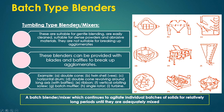Blenders can be segregated into batch or continuous types. Tumbling-type blenders or mixers are suitable for gentle blending, easily cleaned, suitable for dense powders and abrasive materials, but not suitable for breaking up agglomerates — though they can be provided with blades and baffles for that purpose. Types include double cone, twin shell, horizontal drum, double cone with baffles, ribbon, vertical orbiting screw, batch muller, and single rotor turbine.